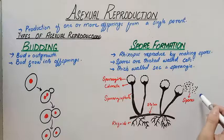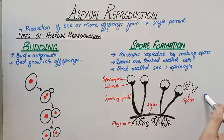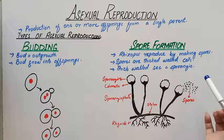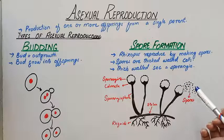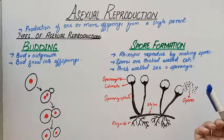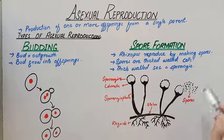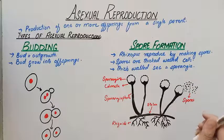The important external factors for spore germination include optimum temperature, moisture, oxygen, and light. When these optimum conditions are present, the fungus will easily grow and become a new fungus.